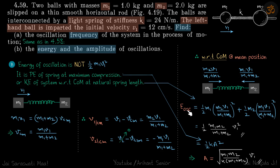And as discussed, the energy of oscillation therefore is half m1 into this square plus half m2 into this square, which gives the answer for energy of oscillation. Now we need to find the amplitude.